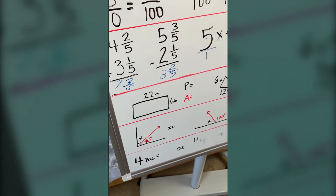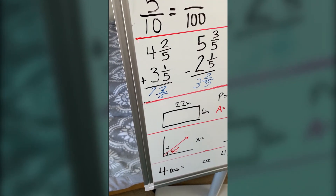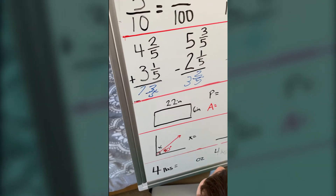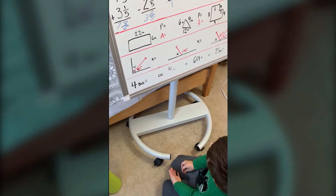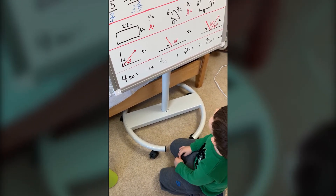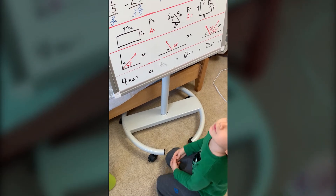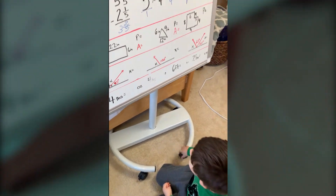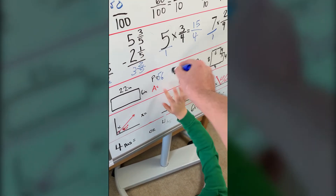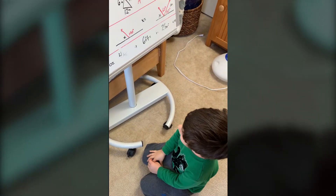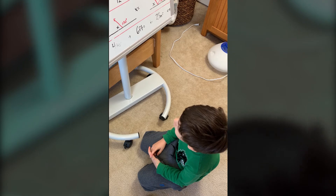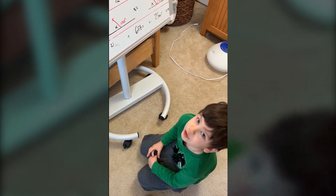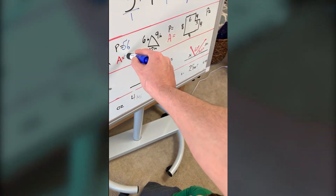Can you figure out the perimeter and the area? The area is not really fourth grade, but can you figure out the perimeter of that? 22 plus 6 equals 28. That equals 56. Is that the answer? Maybe. That's right. I can figure out the area! So: 60, 120, 132. 132 is the area.